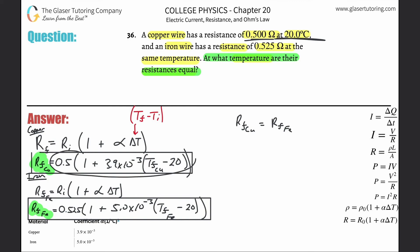Now let's start plugging in the values and distributing. For copper it's going to be 0.5 times (1 + 3.9 × 10⁻³ × T − 3.9 × 10⁻³ × 20). I'm going to simplify by calling the final temperature just T, so the change in temperature becomes (T − 20), and I'll distribute the initial resistance through.